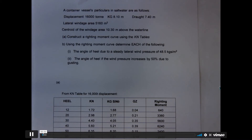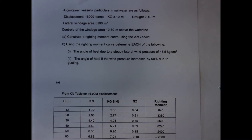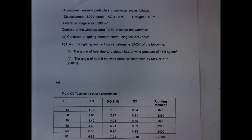This is a typical wind heeling problem. We're given displacement, KG, draft, the windage area, and the centroid. We need to construct a righting moment curve using the KN tables, and from the curve calculate the angle of heel due to a steady wind and then a gusting wind — a 50% increase.